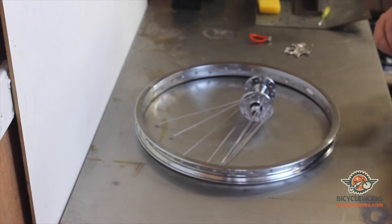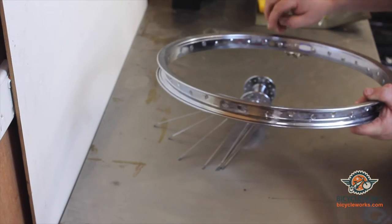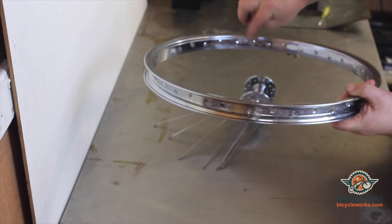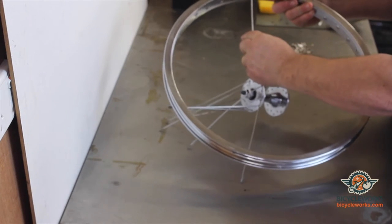Once that's done we're going to find the valve hole on the rim and we're going to start on the first hole to the left of the valve hole. So any spoke in that hole, like that.